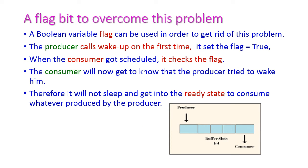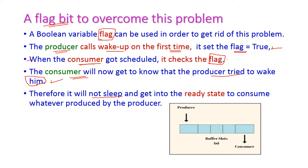To overcome this problem we can use a flag bit, which is a boolean variable. When the producer calls the wake-up system call for the first time, it sets the flag to true. When the consumer gets scheduled, it checks the flag — if the flag is true, the consumer knows the producer tried to wake it up, so it will not sleep and instead moves to the ready state immediately to consume the buffer slots produced by the producer. This way, we can overcome the problem using the flag bit.